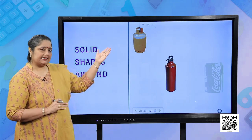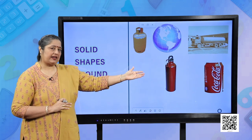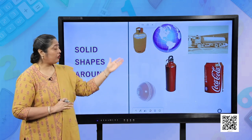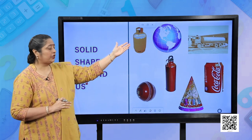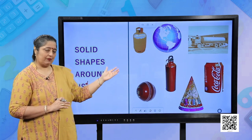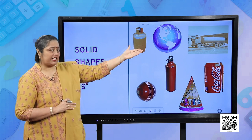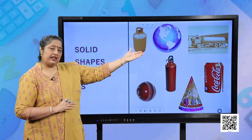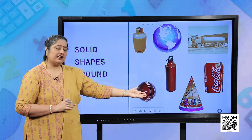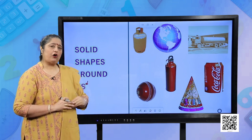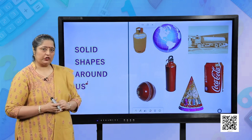A gas cylinder, a water bottle, your Coca-Cola can — these are all cylindrical shapes. Then we have a globe and a ball in the shape of a sphere, a water tanker again in a cylindrical shape, and your birthday cap. You can also see many other shapes around you.